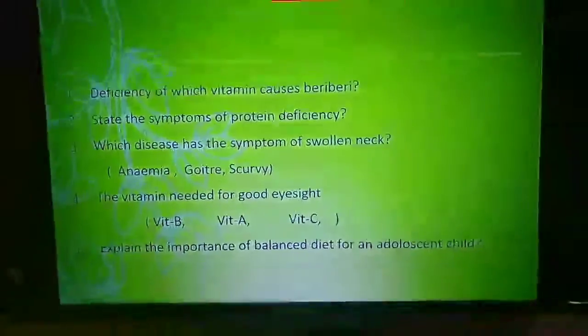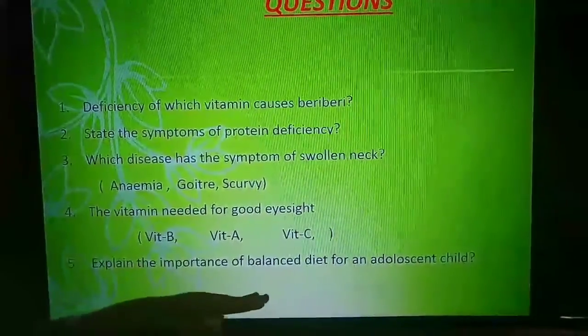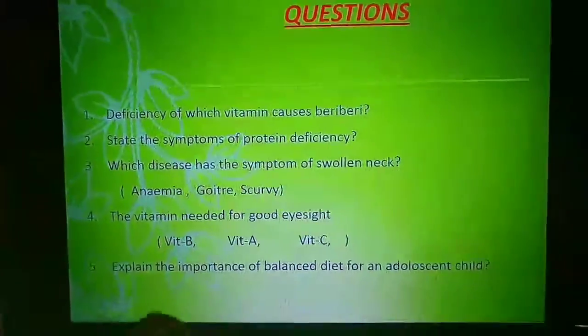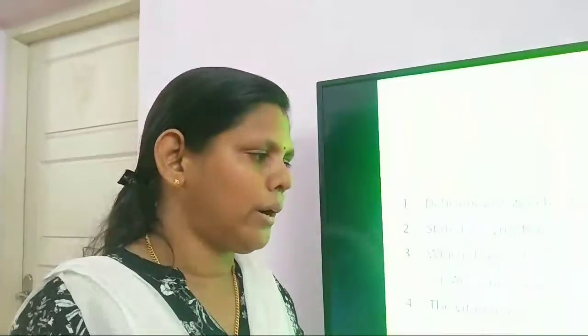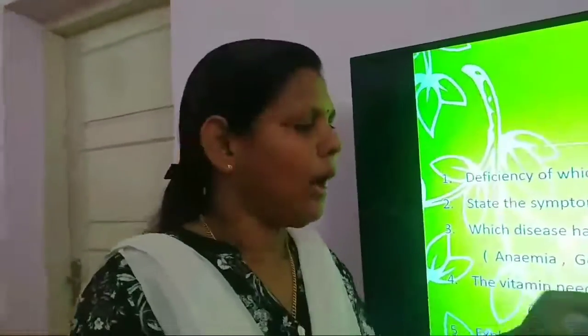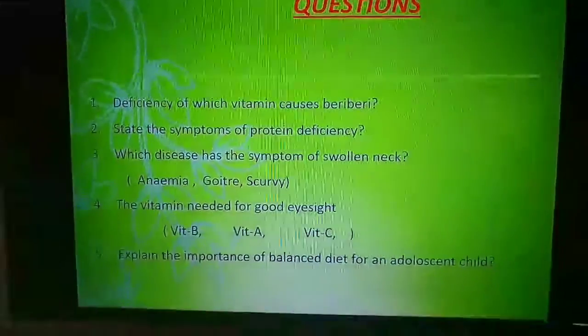Last question: explain the importance of balanced diet for an adolescent child. The adolescent period is the growing period of children. At that time, children need more proteins and carbohydrates — proteins for growth and development, and carbohydrates for getting energy. So children in the adolescent age group should get a balanced diet.